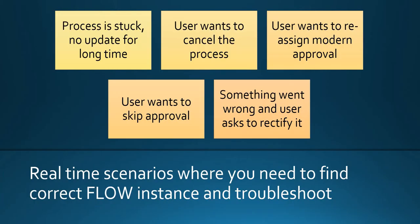Why do we need to locate such running instances of the flow for a particular record? There might be hundreds of different scenarios. An end user might come to you as admin or IT person saying their process is stuck. A user might want to cancel the approval process, reassign the modern approval to someone else, skip the approval, or delete a record and start over. There could be any scenario where the user might want to cancel the current running instance of the flow.